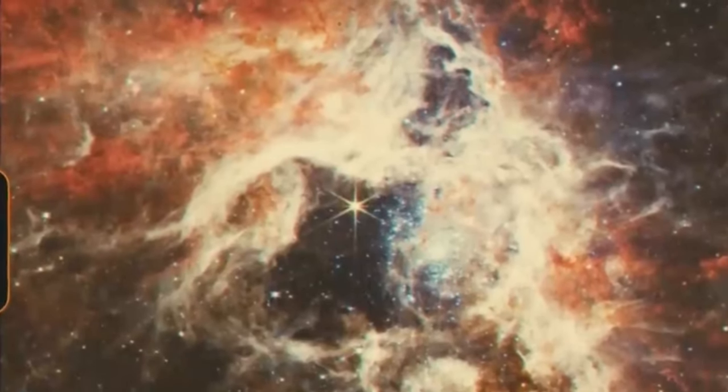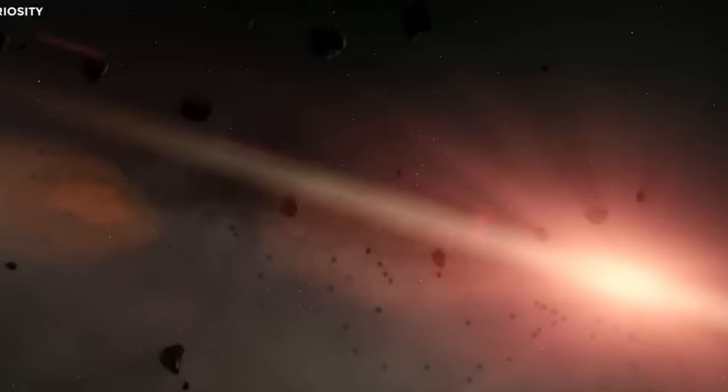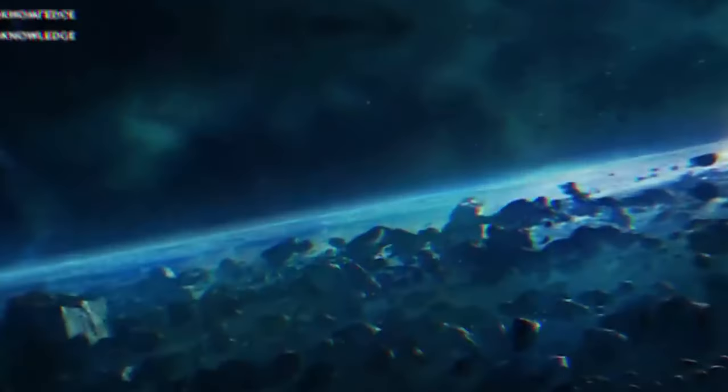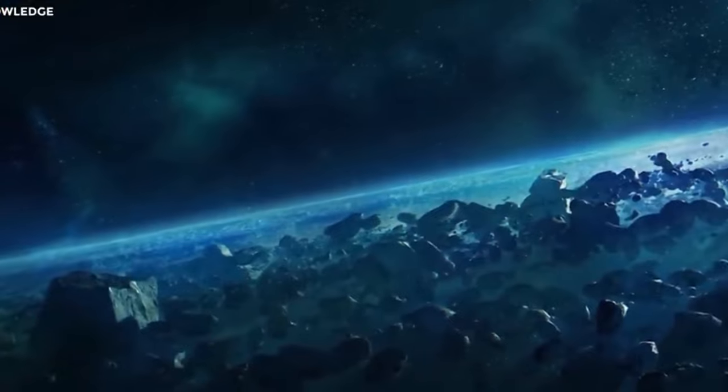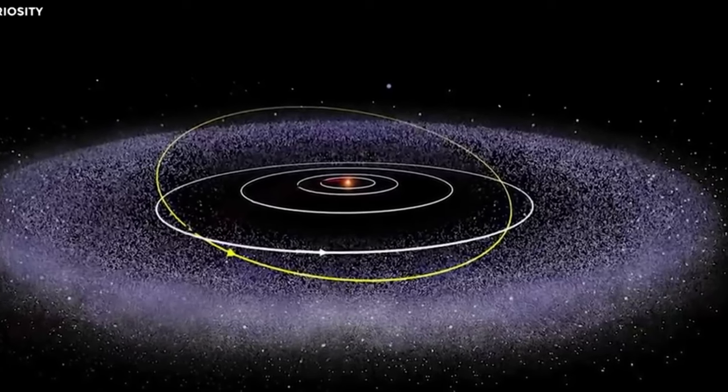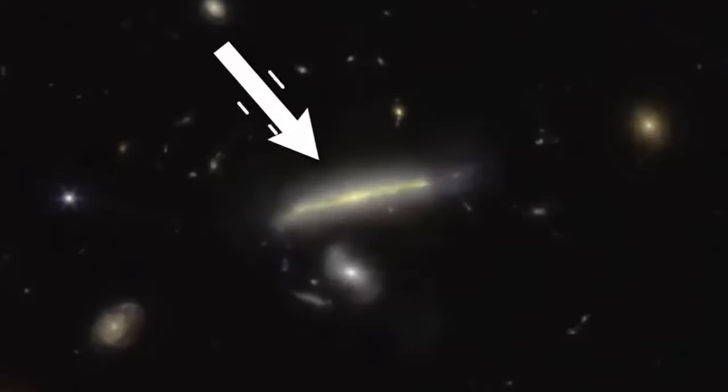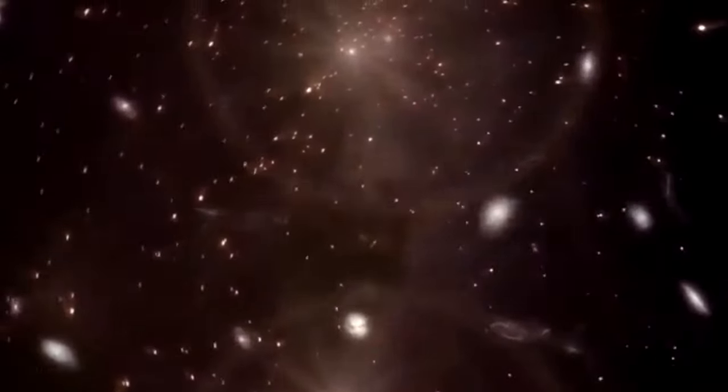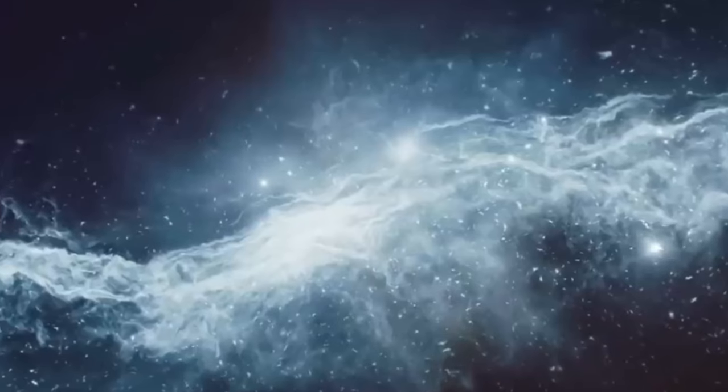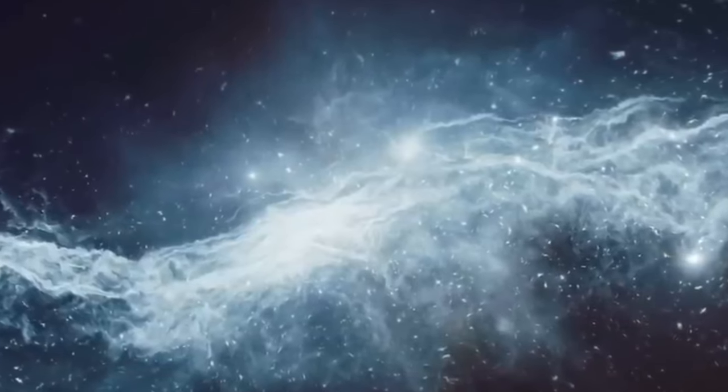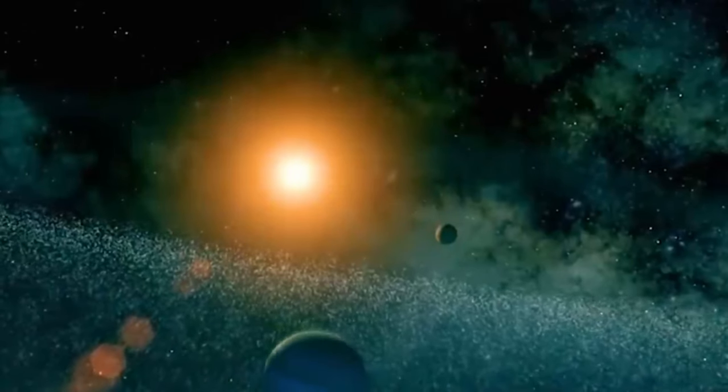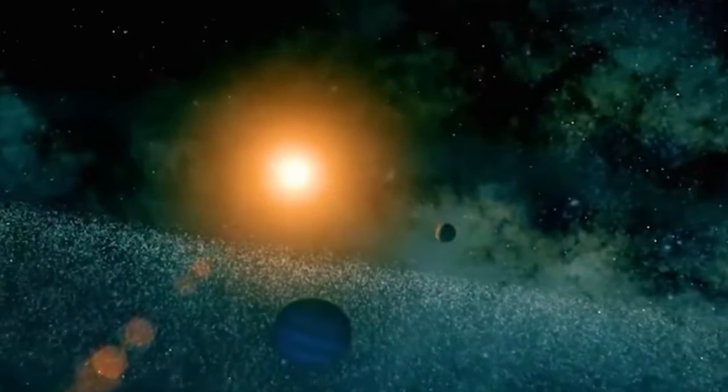However, with the James Webb Space Telescope's advanced capabilities, Spilker and his team managed to detect PAHs in a galaxy known as SPT-S41847, located over 12 billion light-years away. The light detected from this galaxy began its journey less than 1.5 billion years after the Big Bang, highlighting the remarkable feat of the universe creating such large, complex molecules at an early age. It's akin to discovering a child prodigy capable of intricate calculations from the outset.